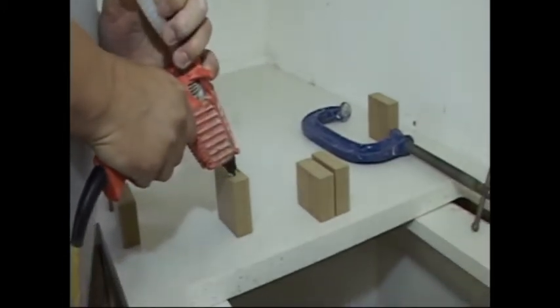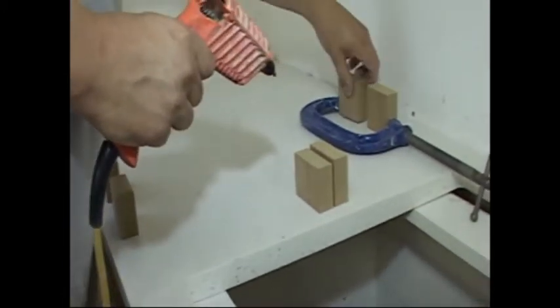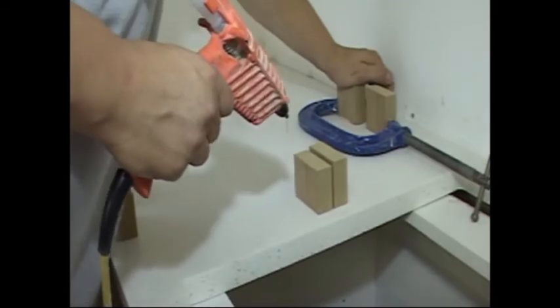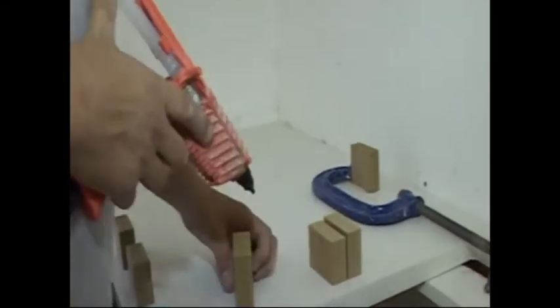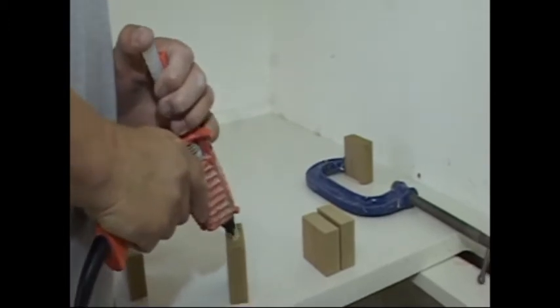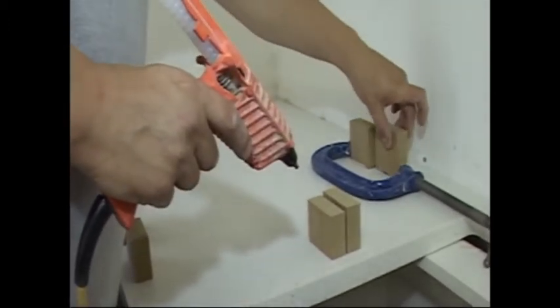There are two or three methods that can be used for cramping the joints together. One method is to apply timber blocks hot melted down to either side of the joint. These blocks will then be used as a brace to tighten the joint once the adhesive is applied.